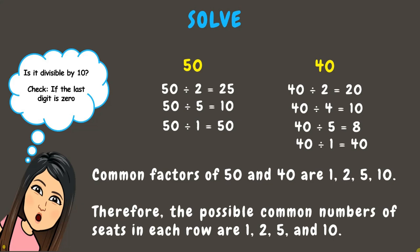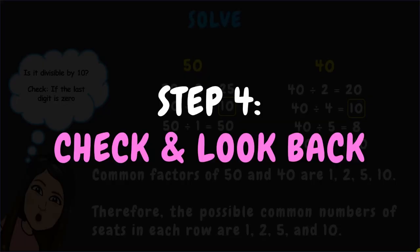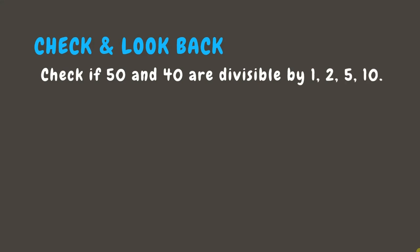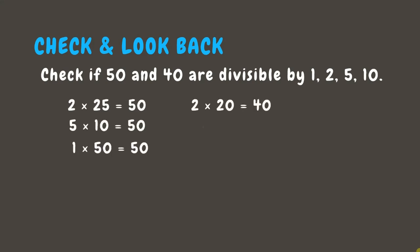Wonderful! Now let's go to our last step: Check and Look Back. This step is optional but helpful to ensure our answer is correct. We can use the opposite operation and multiply the factors, or use another strategy like prime factorization to verify our results. In this example, we will multiply the factors to confirm they give us 50 and 40.